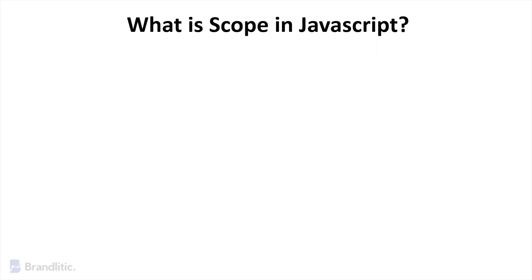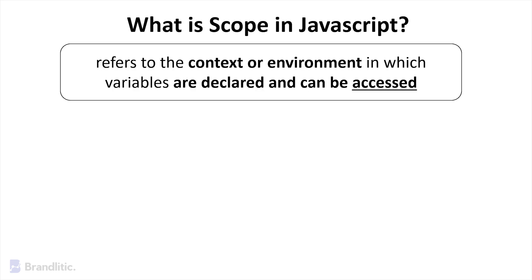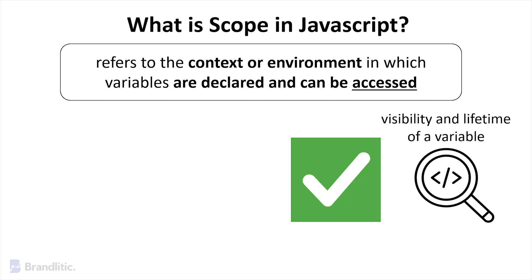What is scope in JavaScript? At its core, JavaScript scope refers to the context or environment in which variables are declared and can be accessed. It dictates the visibility and lifetime of a variable, determining where in your code a particular variable is valid and accessible.